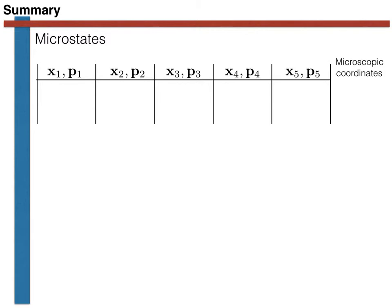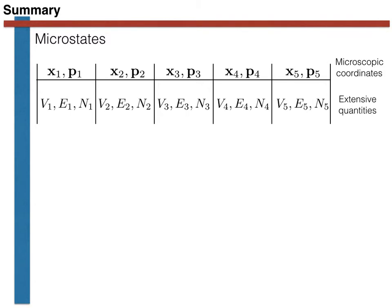Each of the microstates in phase space will have a value for the various extensive thermodynamic quantities. In our five-state example, each microstate has an associated value for its internal energy, its volume, and its number of atoms.